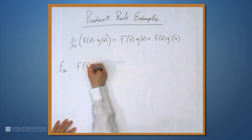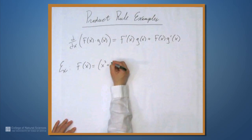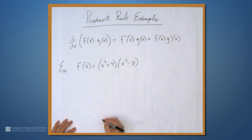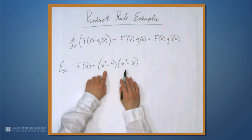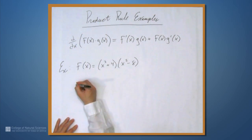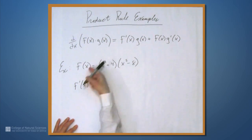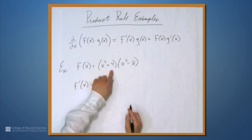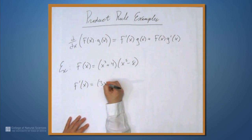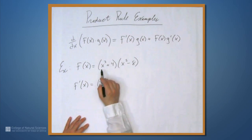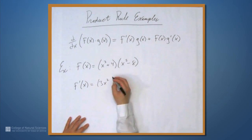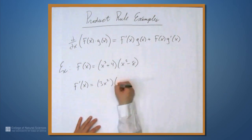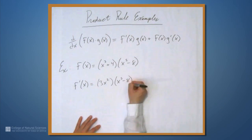Let's suppose that f is (x³ + 4)(x⁵ - 8). We have a product of two things here — the first part and the second part. So let's write f' using the product rule. First, we take the derivative of the first part, which is 3x², the derivative of x³ (plus 0 for the derivative of 4), times the second part unchanged: x⁵ - 8.